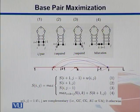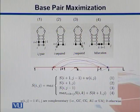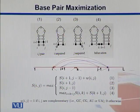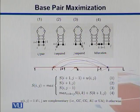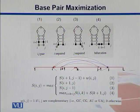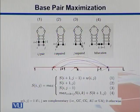Here we see all four cases again: case 1 is where i and j are paired, case 2 is where i stays unpaired, case 3 is where j is unpaired, and case 4 is bifurcation. We can see these interactions in the diagram. In case 1, the score is S(i+1, j-1) plus the weight of i and j if they pair. Case 2 derives the score from S(i+1, j) with i unpaired. Similarly, the bifurcation case and the j-unpaired case are also represented in the equations.